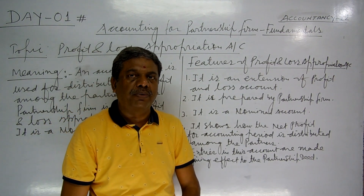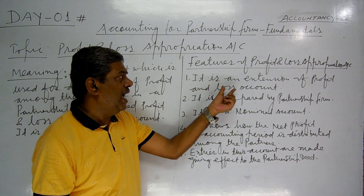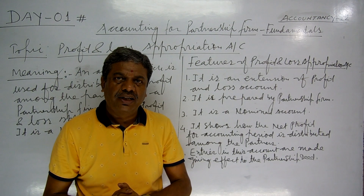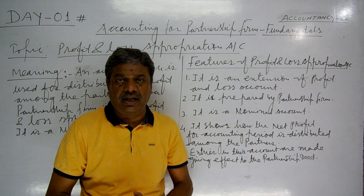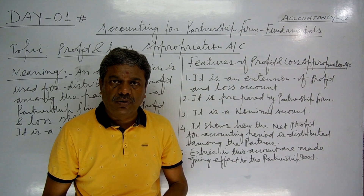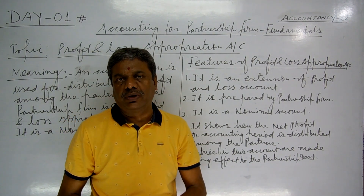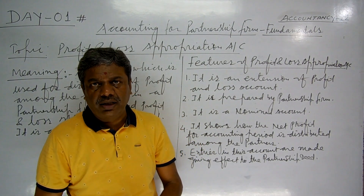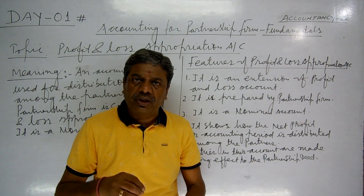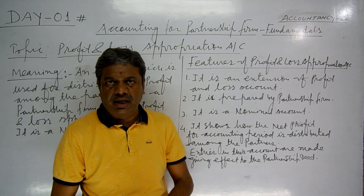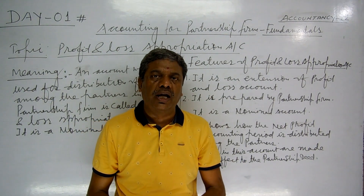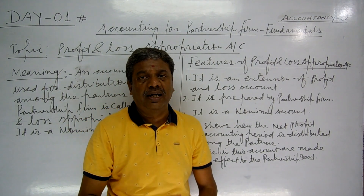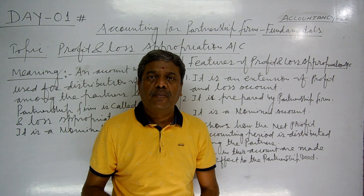Some features of the Profit and Loss Appropriation Account. Number one: it is an extension of the Profit and Loss Account. The net profit is transferred to the Profit and Loss Appropriation Account. The Profit and Loss Appropriation Account is the extension of the Profit and Loss Account.